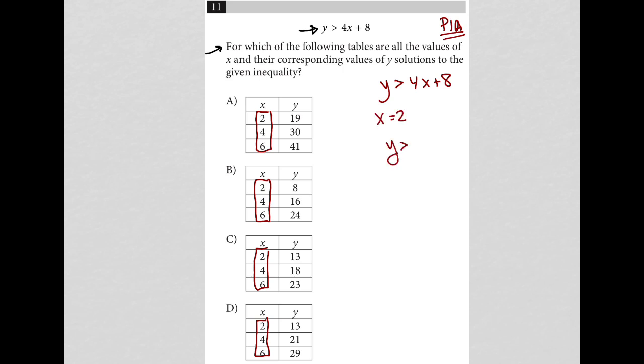So I'd have y is greater than 4 times 2 plus 8, y is greater than 8 plus 8, and therefore y is greater than 16. Now let's look at my answer choices. So for choice A, my y value is 19. So yeah, that's true. That's greater than 16.